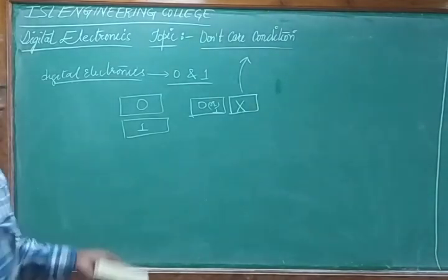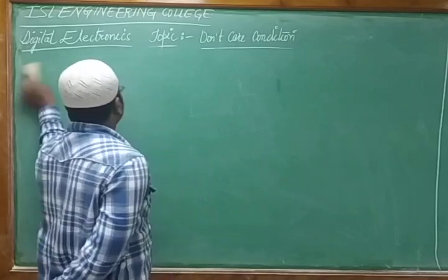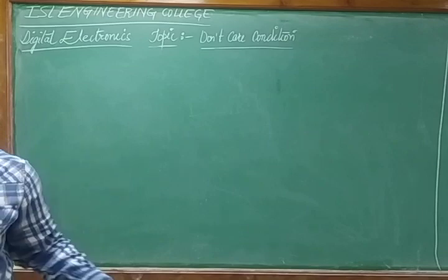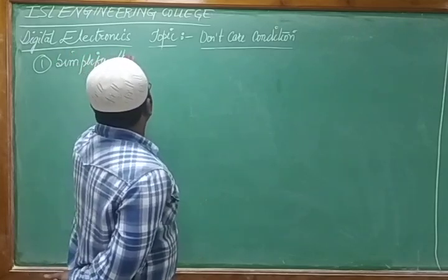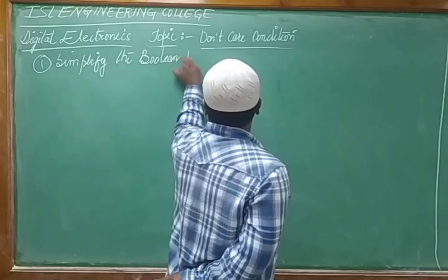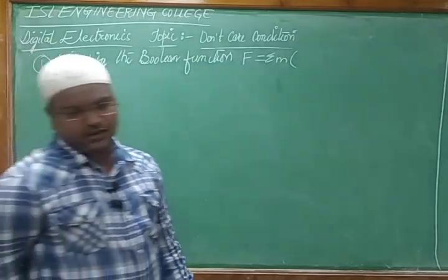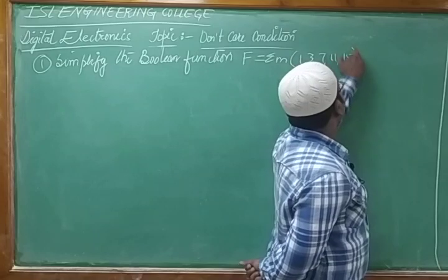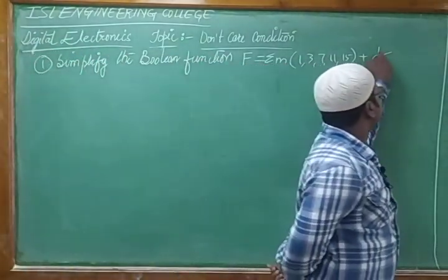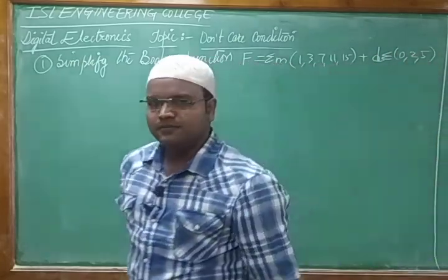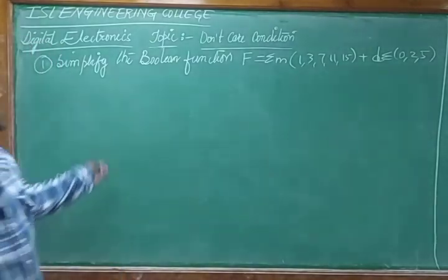Suppose I take one question where they give certain bits as don't care and certain bits as minterms, so we need to design the K-map for both conditions. The first question is: simplify the Boolean function F = Σm(1, 3, 7, 11, 15) + D(0, 2, 5), where D indicates the don't care bits.